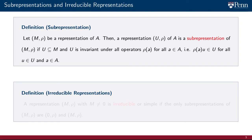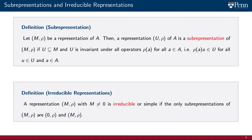Now we can introduce the notion of irreducible representation. A representation M, Rho, where M is different from the zero vector space, is irreducible or simple if the only sub-representations of M, Rho are the zero representation or M, Rho itself.